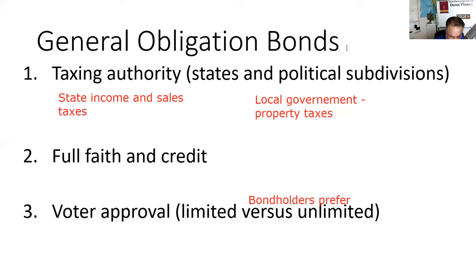Every once in a while this gets hashed out in court, and Disney says here's our political charter. Developers have gotten the same idea — they incorporate a city, issue $300 million in unlimited tax GO bonds, and sell 60 homes. The 60 homeowners are on the hook for $300 million in unlimited GO bonds. They say their property taxes are more than their monthly mortgage payments.